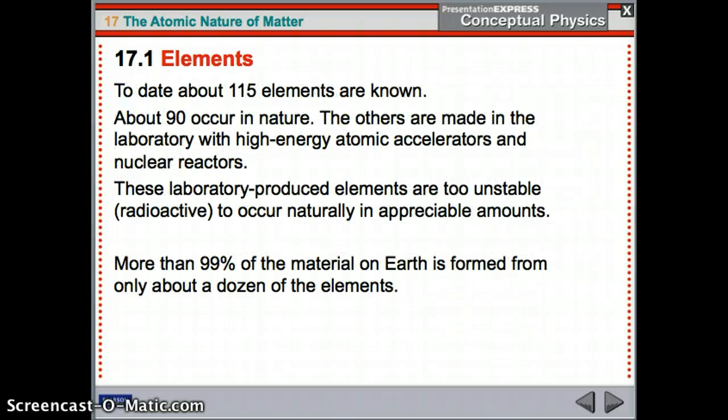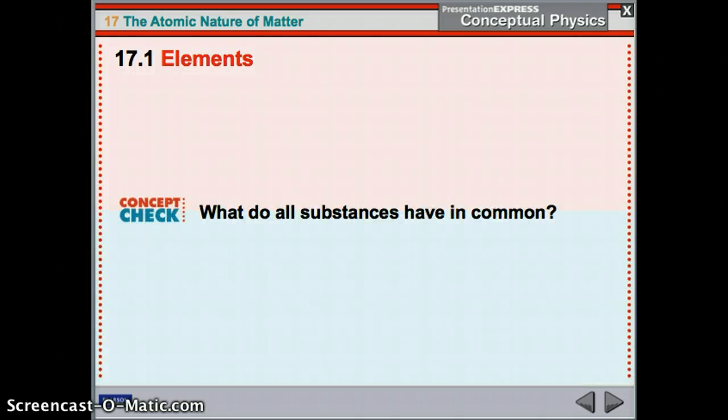All right, we know of 115 elements right now. 90 occur in nature and the others are in a laboratory made with laboratory equipment. So 90 of the 115 are natural, the rest are synthetic. And more than 99% of the material is formed from only a dozen elements. So everything is formed from only 100 and 99% is only made of 12 different elements. So what do all substances have in common? They are all made of atoms.